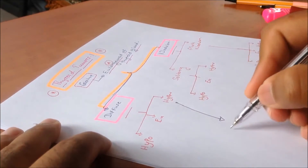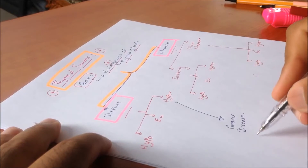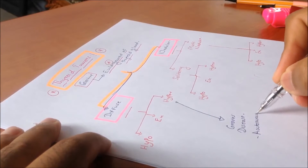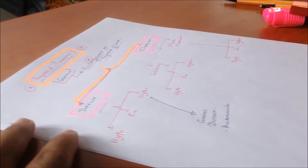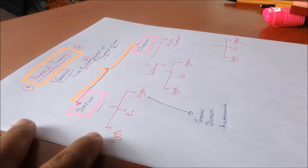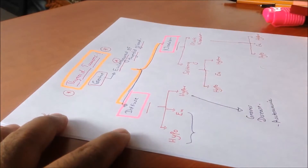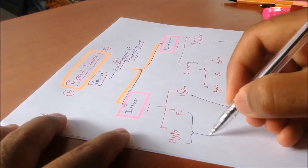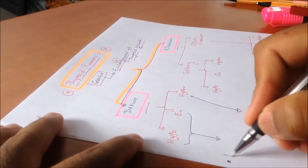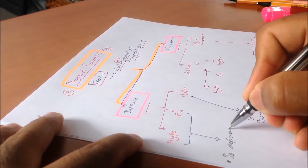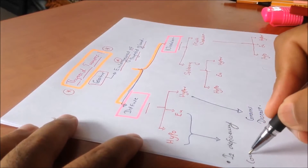Speaking about diffuse goiters which are hyperthyroid, we should always remember Graves' disease, which is an autoimmune condition that will be discussed in a different lecture. If there are goiters which are either hypo or euthyroid in function, it could be due to iodine deficiency, which could lead to an increase in gland size.